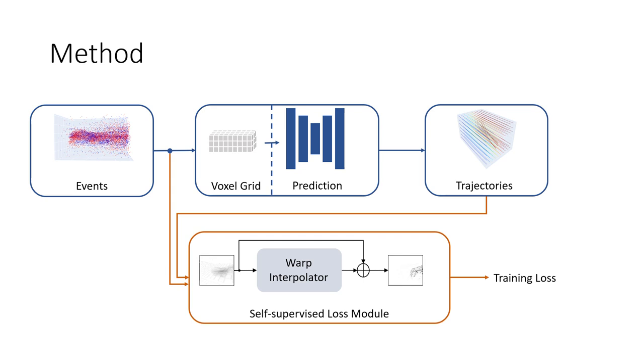The input to it are the predicted trajectories and the raw events. It warps the events to a reference time, builds an image of warped events and takes the inverse sharpness of the image as training loss. However, this needs association between potentially millions of events and thousands of non-linear trajectories.